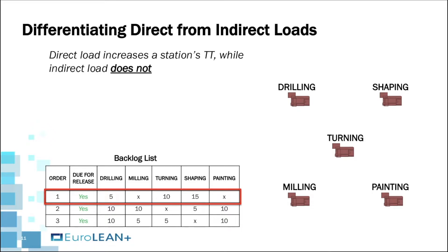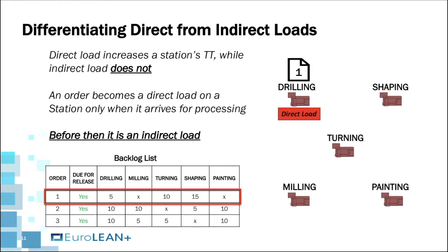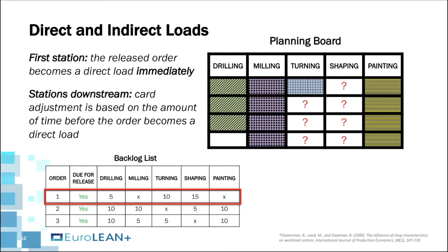A direct load increases a station's throughput time (TT), while an indirect load does not. An order does not become a direct load on a station until it arrives in the station's queue for processing — before then, it is an indirect load. So upon release, Order 1 is a direct load on drilling but an indirect load on turning and shaping. The further downstream a station is in an order's routing, the more indirect the order's load is on that station.